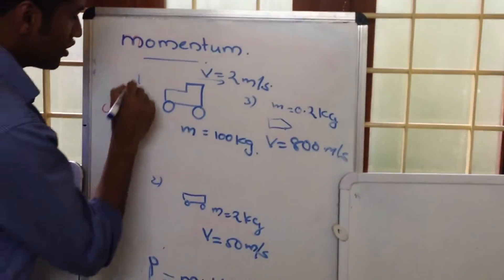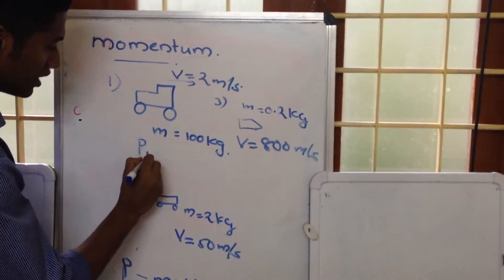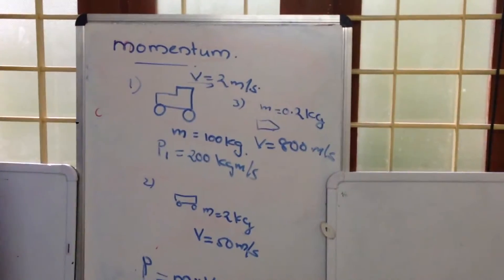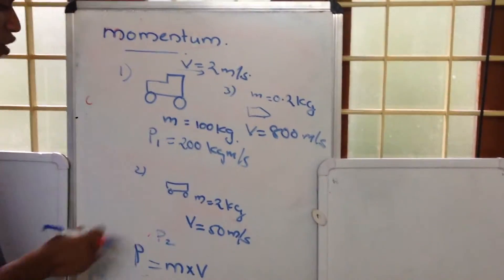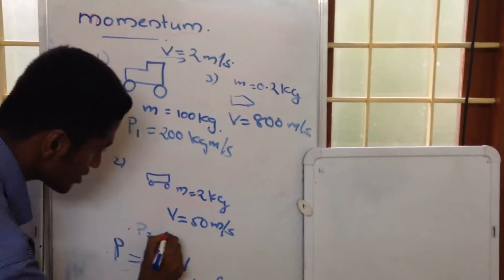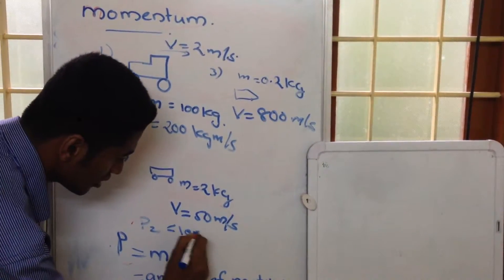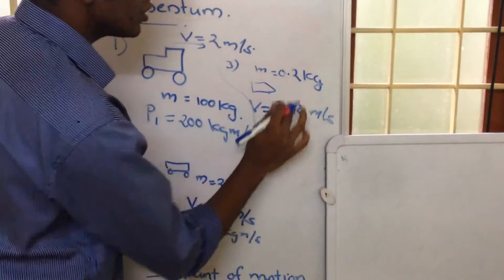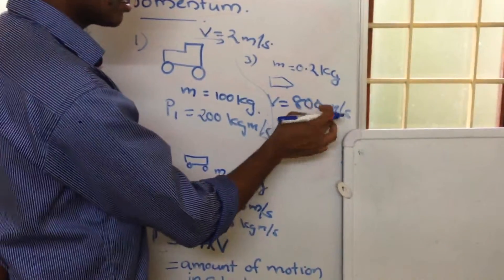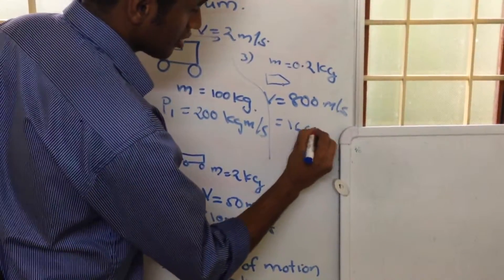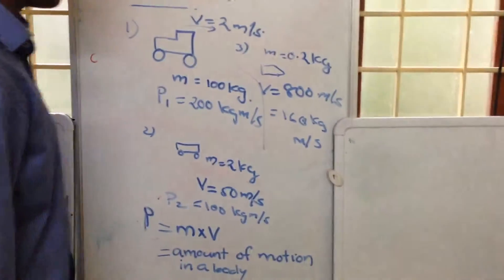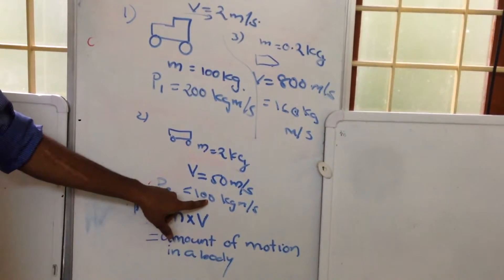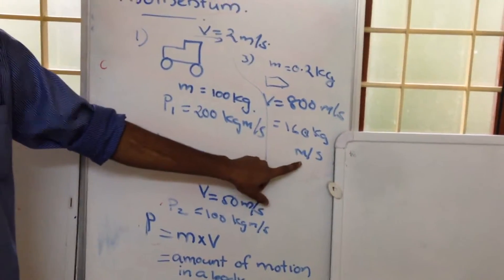For the first case of the vehicle, the momentum p1 is equal to 100 into 2, that is 200 kilogram meter per second. For the second case, the momentum p2 is equal to 2 into 50, that is 100 kilogram meter per second. And in the third case of the bullet, it is equal to 0.2 into 800, that is 160 kilogram meter per second. So the amount of motion in the large truck is 200, in the toy it is 100, and in the bullet it is 160 kilogram meter per second.